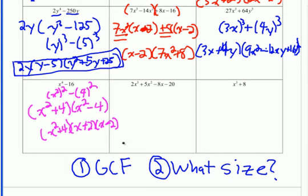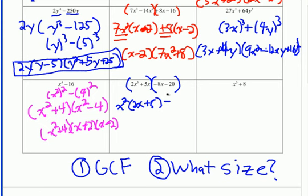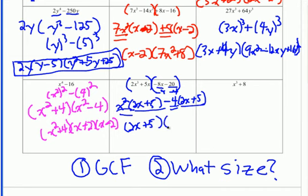For this next one, there is no GCF. It has four terms, so I automatically think grouping. I'll pull out x² from the first group, leaving 2x plus 5. For the second group, because there's a negative in the middle, I pull out a negative 4. Dividing each term in that group by negative 4 changes the signs, giving positive 2x plus 5. Now both parentheses match, so I pull out 2x plus 5. What's left is x² minus 4, which is a difference of squares and factors further. Don't forget the 2x plus 5.